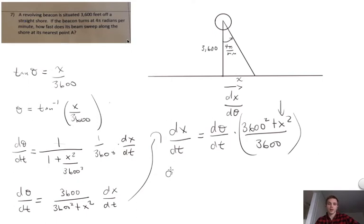And then the answer would be dx dt equals, what do we have for d theta, 4 pi, 4 pi radians per minute, times 3600 squared plus 0 divided by 3600 is equal to 3600.